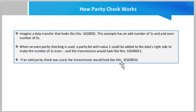If an odd parity check was used, the transmission would look like this: 10100010.